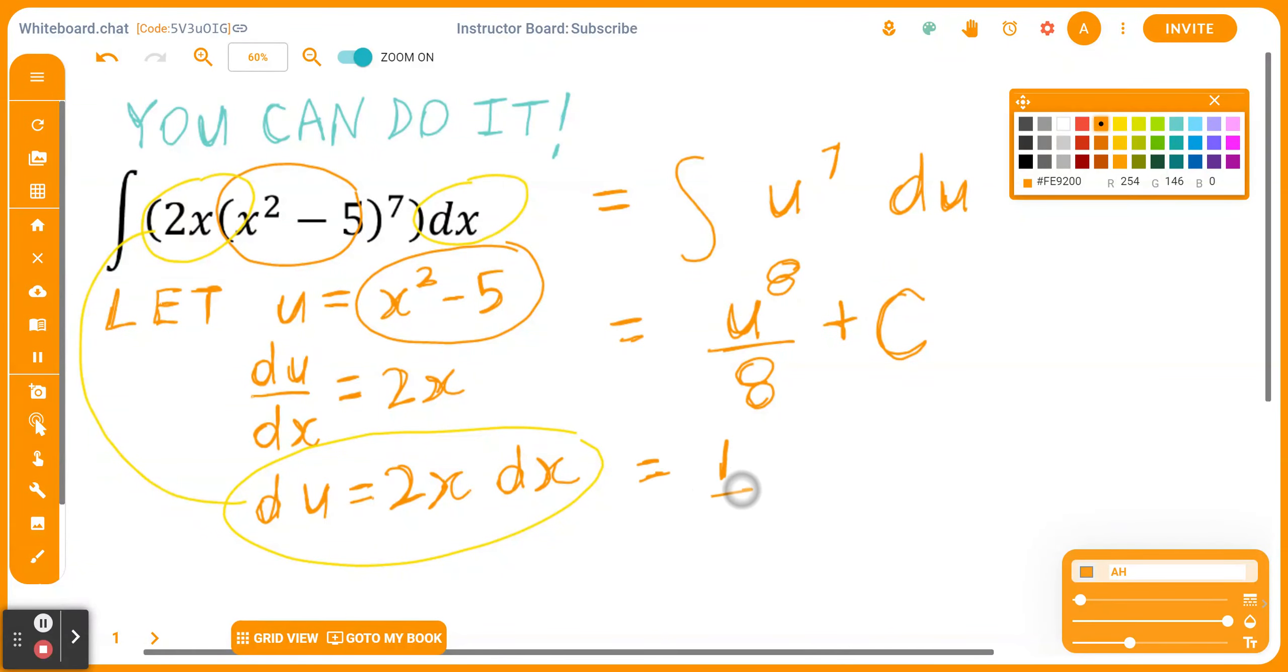And here comes the final answer. 1 divided by 8 times, in brackets, x squared minus 5 to the power of 8 plus c.